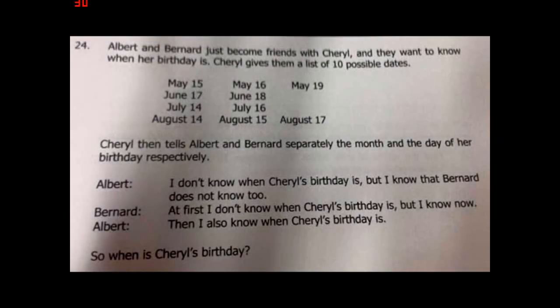Hey everyone. Recently I came across a question published in the April 8th exam of the Singapore and Asian School Maths Olympiads, or the SASMO. Now the question was actually very simple: Albert and Bernard had just become friends with Cheryl and they want to know when her birthday is. Now Cheryl gives them a list of 10 possible dates. Cheryl tells Albert and Bernard separately the month and day of her birthday respectively. Given those conditions, you have to tell when Cheryl's birthday is. Now this question actually became viral, so let us try to solve it.